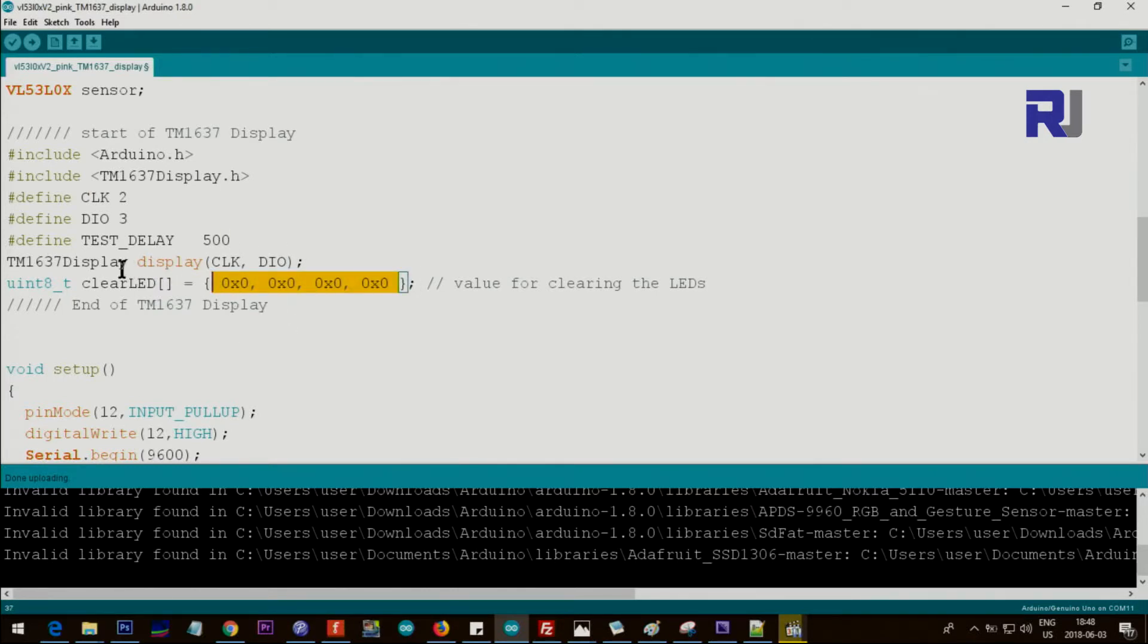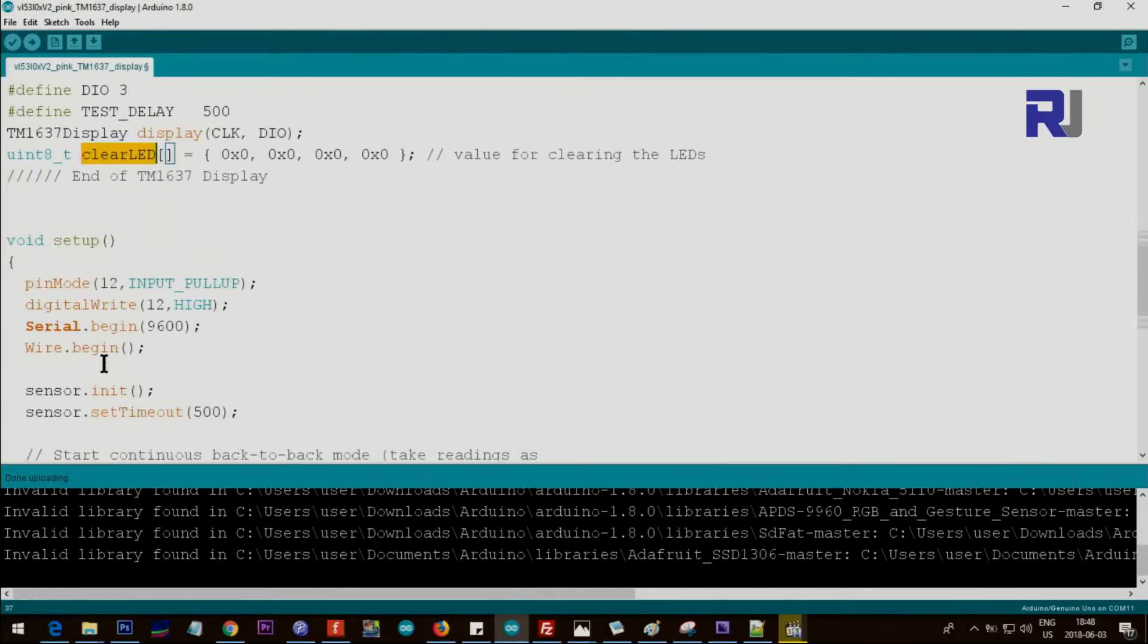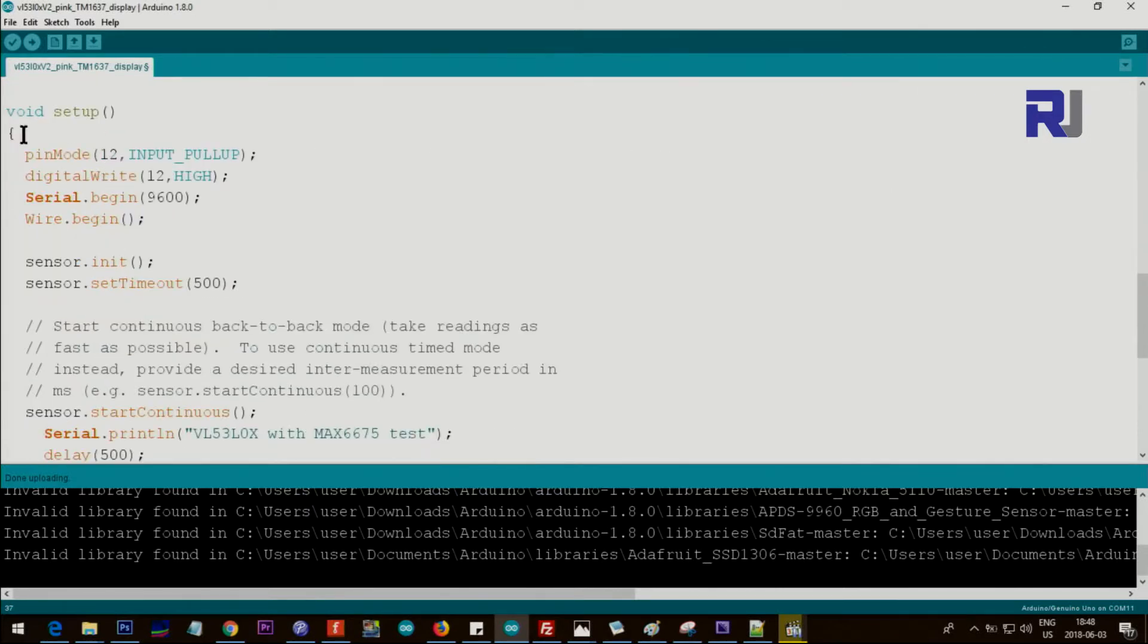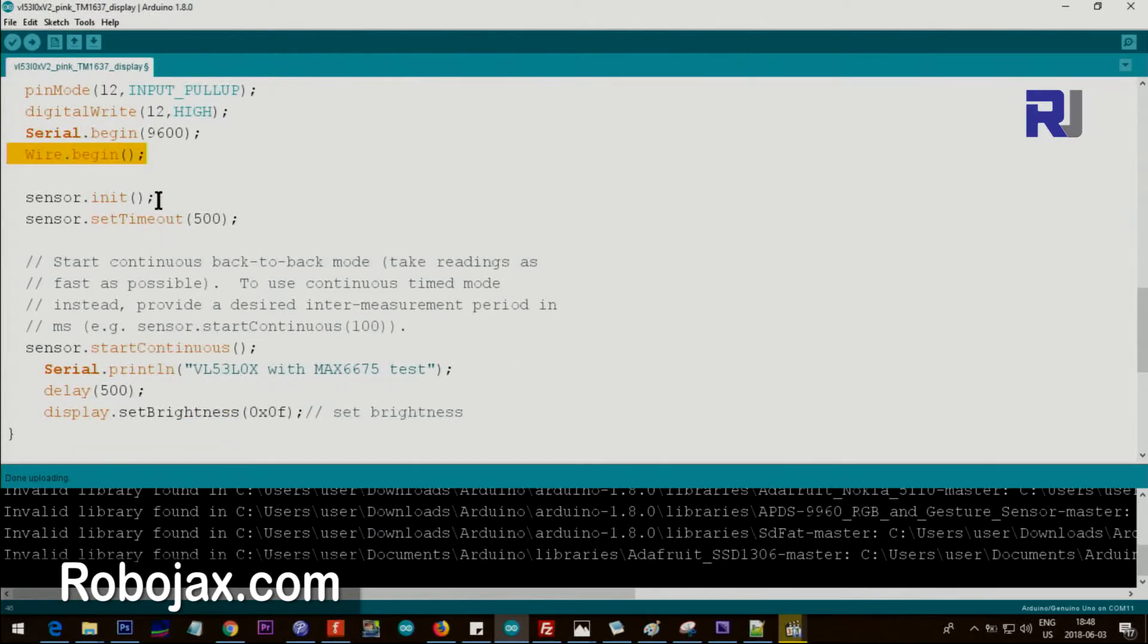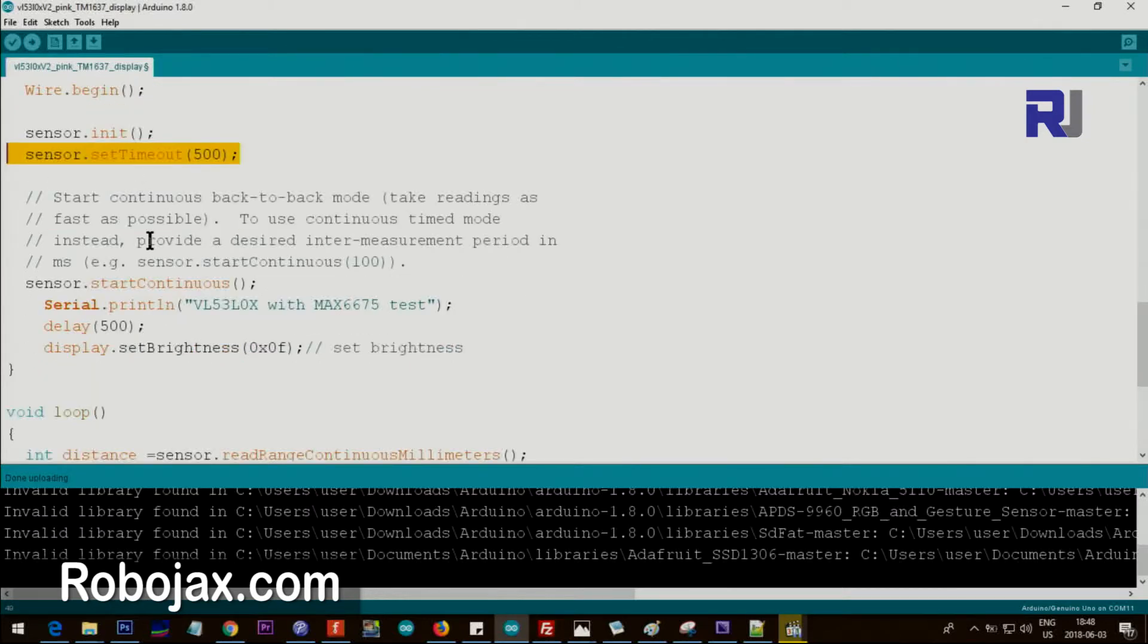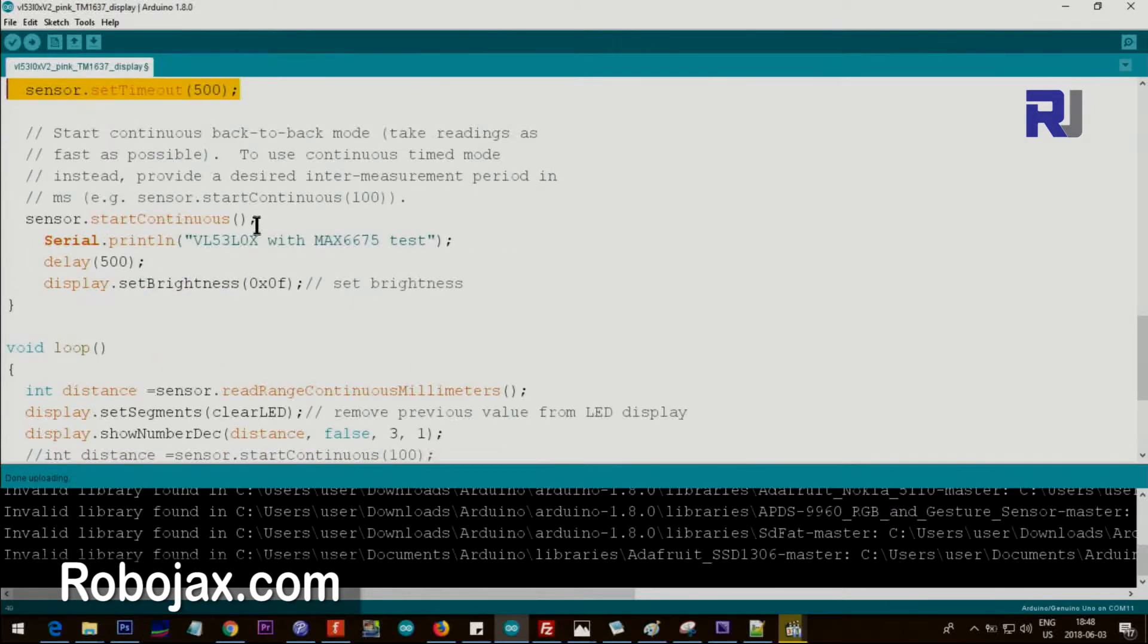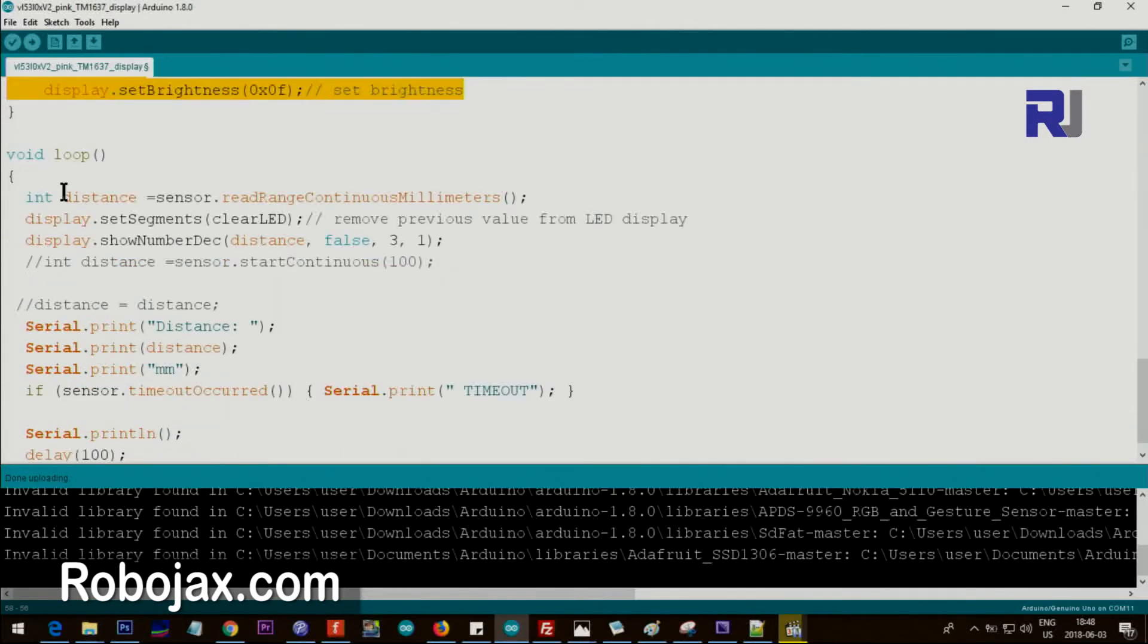This is the time that delays between readings. We create a display object using these two values, and 0-0-0-0 is to clear the screen. Inside the setup, we're setting pin 12 as a pull-up, beginning the I2C communication, initializing the sensor, setting the timeout for 500 milliseconds, and then starting continuous reading.